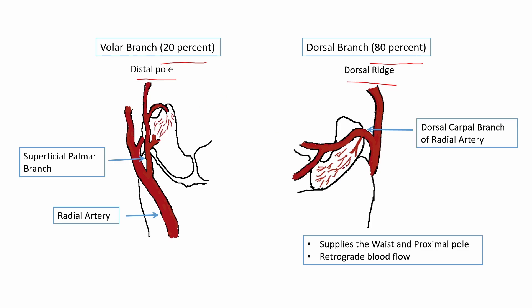Any fracture at the level of the waist or proximal to the waist can interrupt this blood supply, leading to avascular necrosis of the proximal fragment of the fracture. That is why scaphoid fractures are prone to avascular necrosis of the proximal fragment.